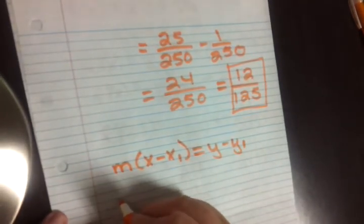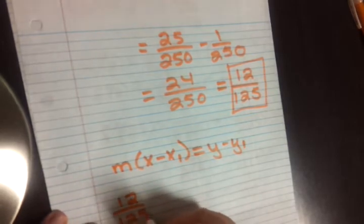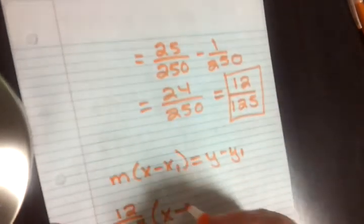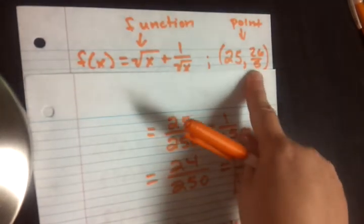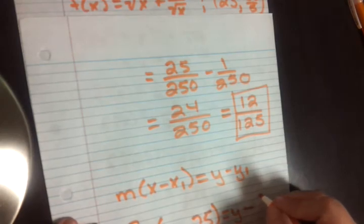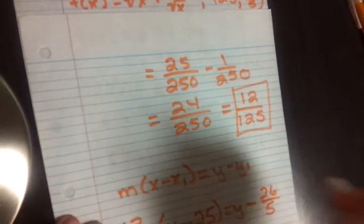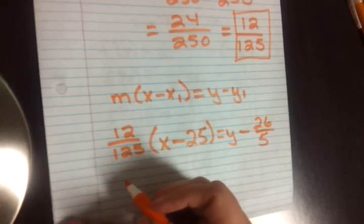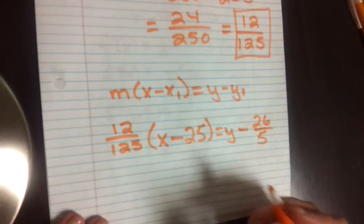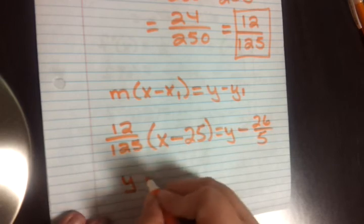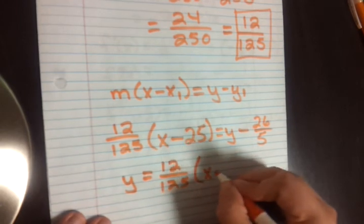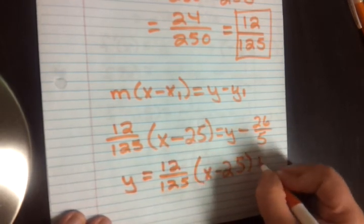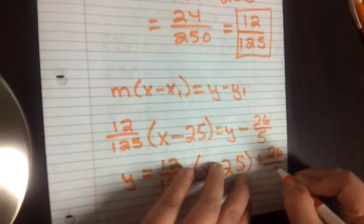They want the actual formula for the tangent line. So we know what the slope is, and we have the point-slope formula that tells us m(x - x1) = y - y1. Up here we had the point that we needed, and right here we have the slope that we need. So we have m, that's 12/125, times x minus x1. x1 was the 25 up here, equals y minus y1. y1 is this 26/5 here, so minus 26/5.